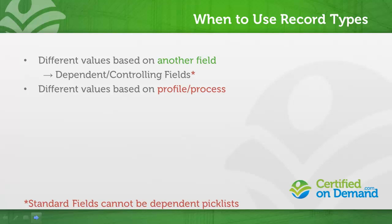Now, let's say that you want to vary picklist values based on a profile. For instance, the inside sales and outside sales teams use a different set of lead statuses. That requires a record type, both because lead status is a standard field and because the values displayed change based on the user's profile and not data within the record.